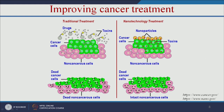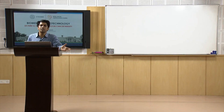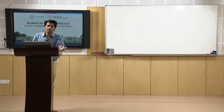In traditional treatment, the drug acts like a bomb — it destroys cancer cells as well as healthy cells. Both the cancer cells and the healthy cells receive the drug and both will die. That is the major drawback of traditional cancer therapy: it kills healthy cells as well as cancer cells.